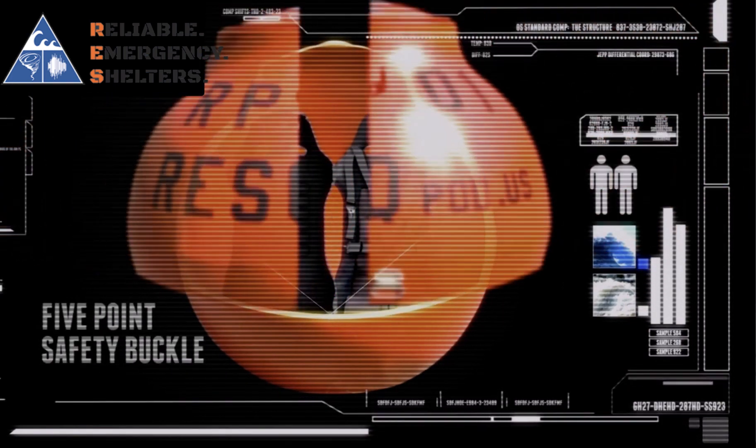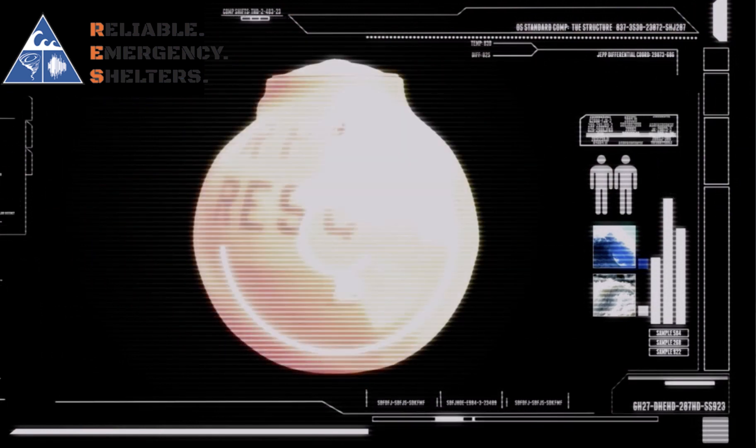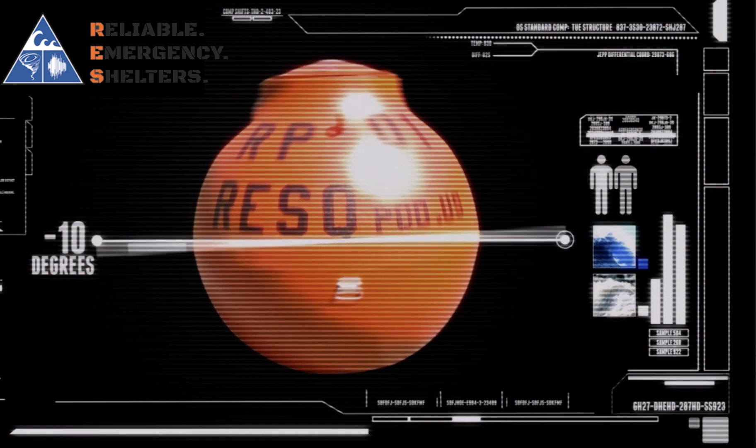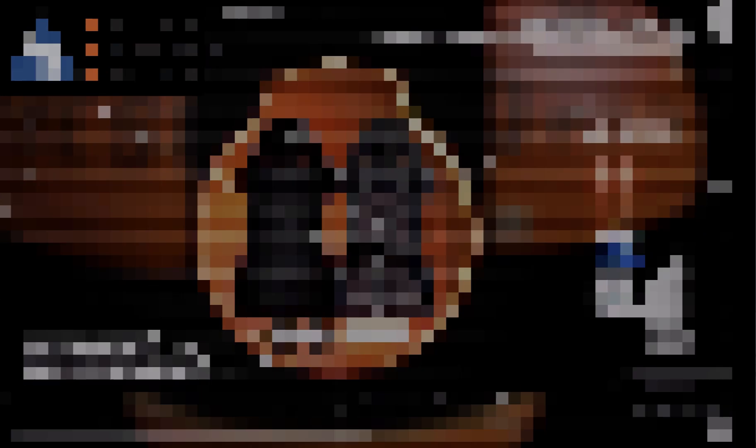According to Randy, the rescue pod is weighted down with 10 cubic feet of foam all at the bottom. This is designed so that it rights itself in the water and the exit is always facing up. There's enough room under the seats for portable oxygen and food rations.